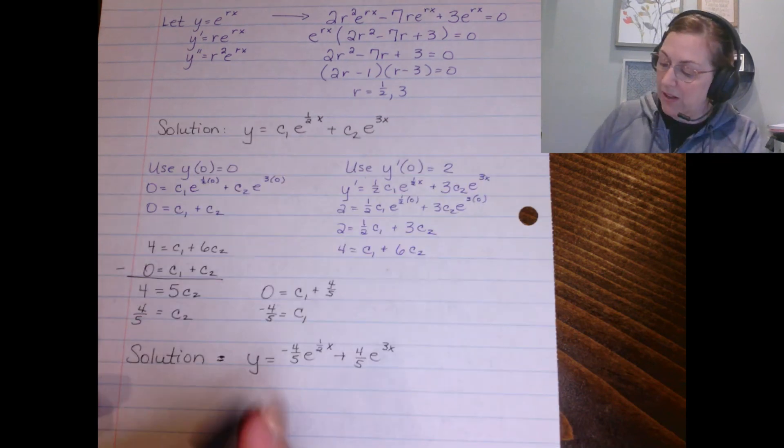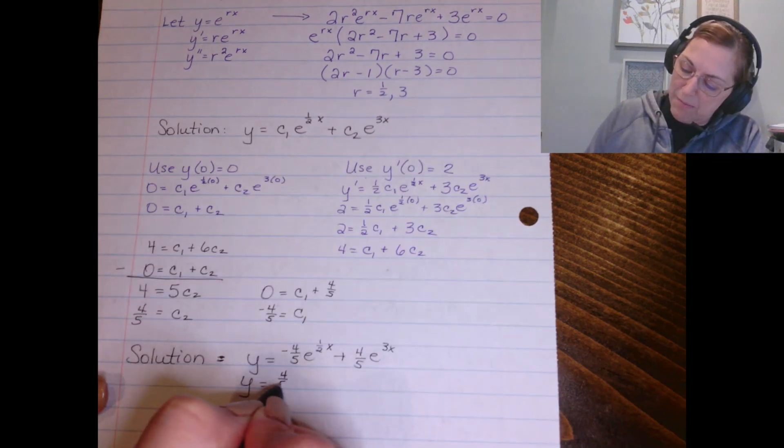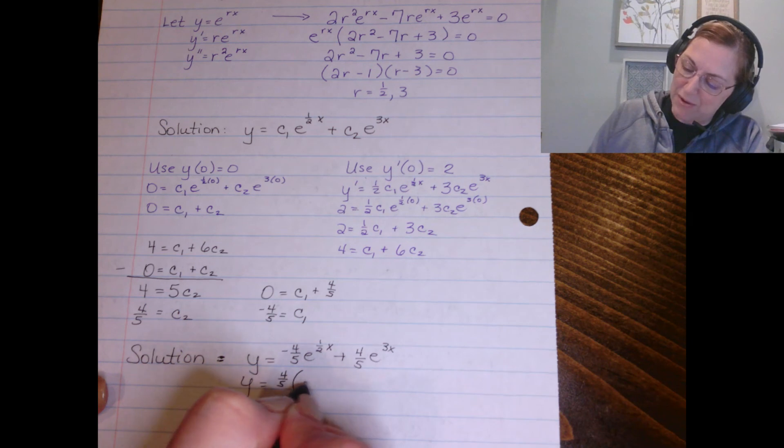Now if you want to factor out the 4/5, you definitely can do that and it might probably be easier if we write it as e^(3x) - e^(1/2 x).